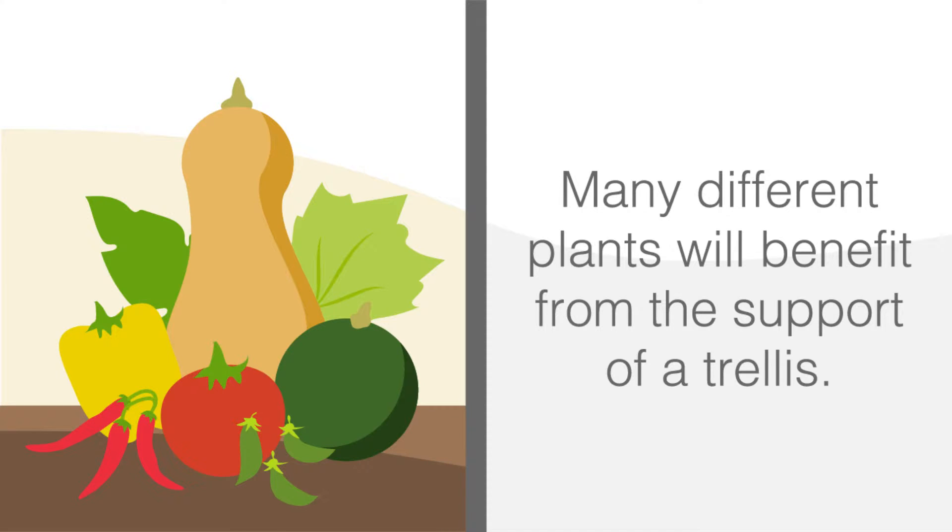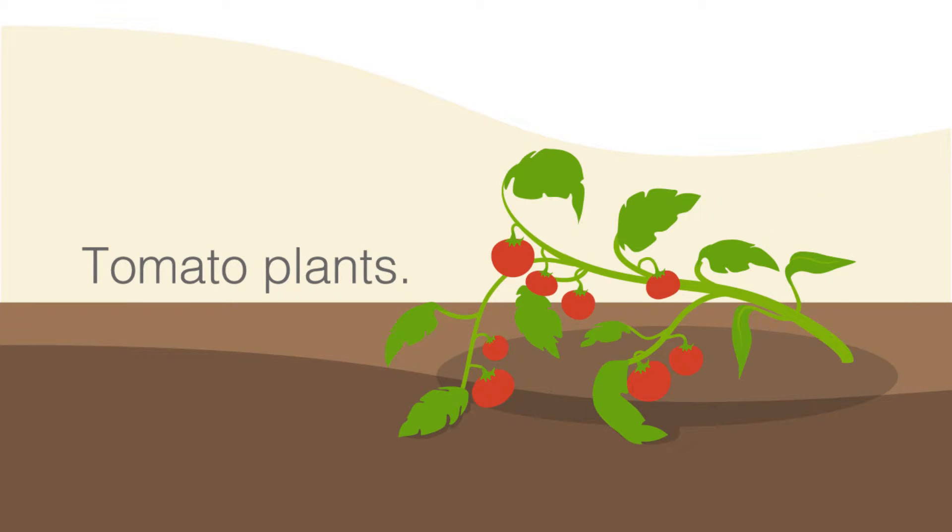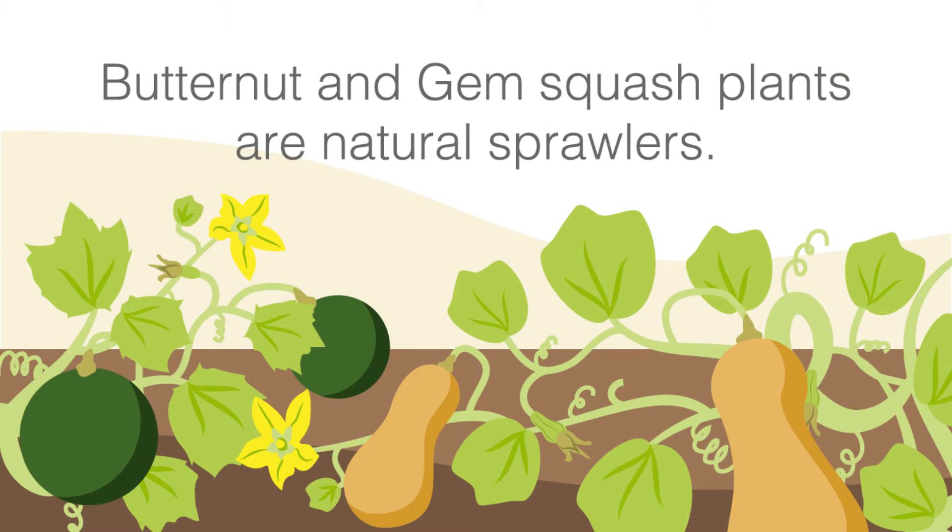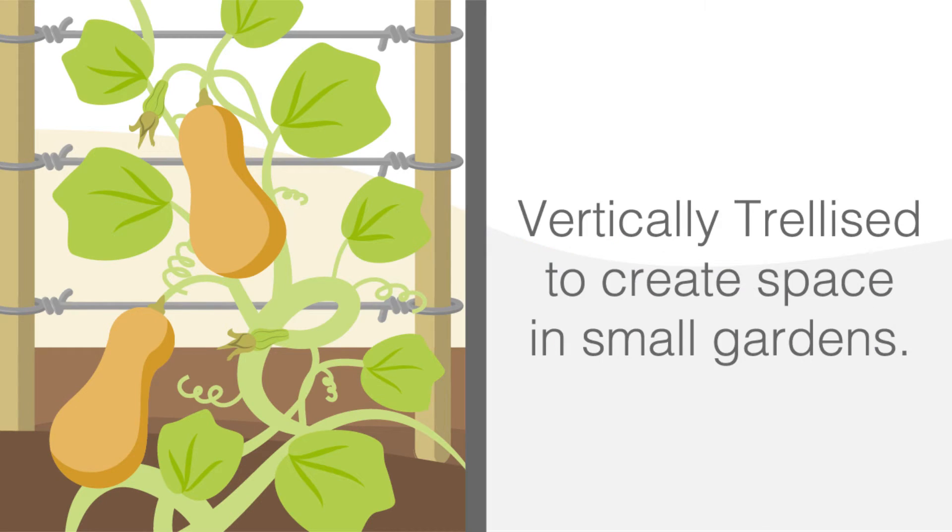Many different plants will benefit from the support of a trellis. Tomato plants will produce too much fruit for their thin stems to carry and therefore need extra support. Bean and pea plants will use other plants or structures for support to climb high and reach the sunlight. Butternut and gem squash plants are natural sprawlers that will either spread along the ground or can be vertically trellised to create more space in smaller gardens.